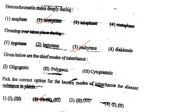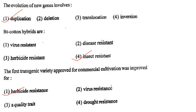Next one: Given below are the chief modes of inheritance — option 1, oligogenic; option 2, polygenic; option 3, cytoplasmic. Pick out the correct option for known modes of inheritance for disease resistance in plants. Answer is option 2: 1, 2 and 3 — that is oligogenic, polygenic and cytoplasmic.